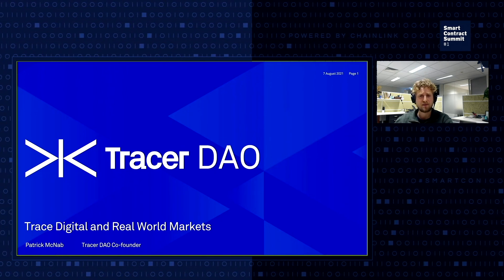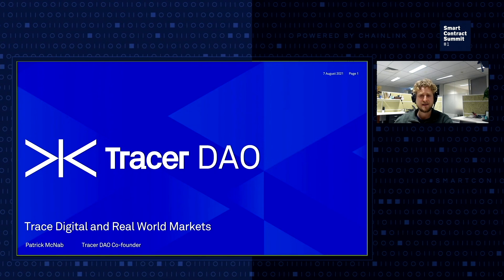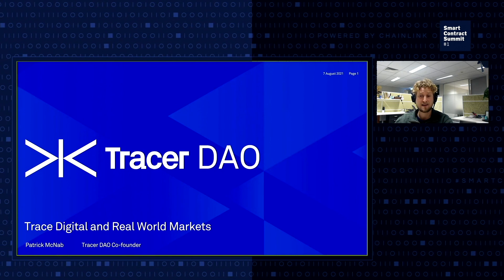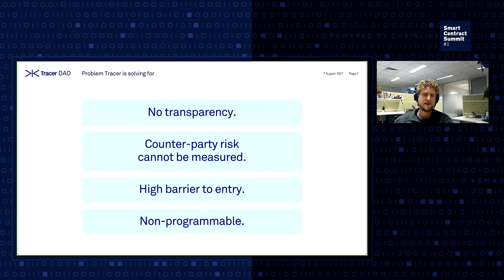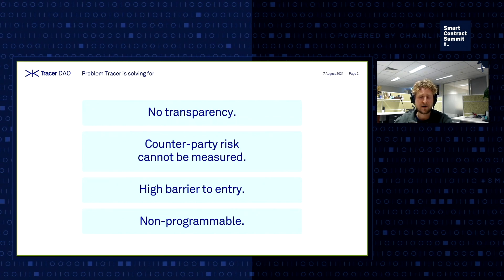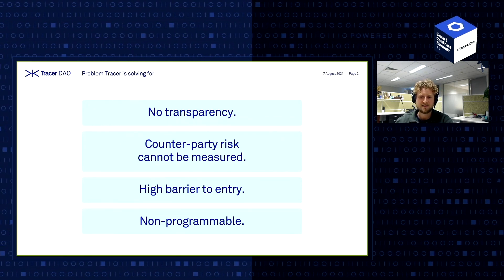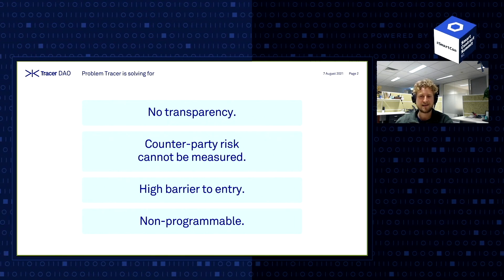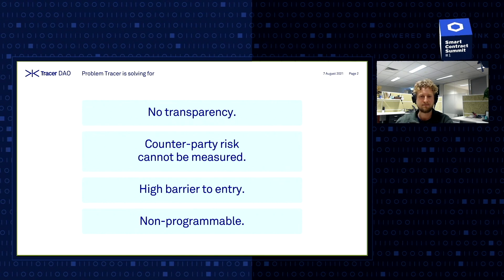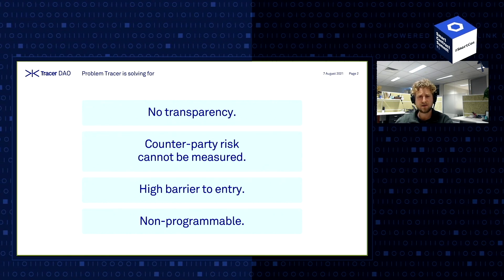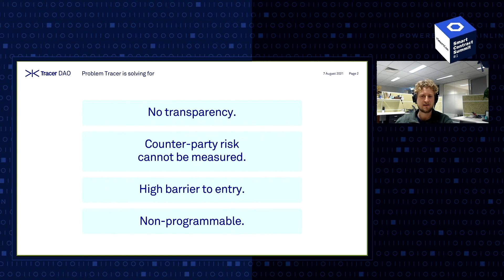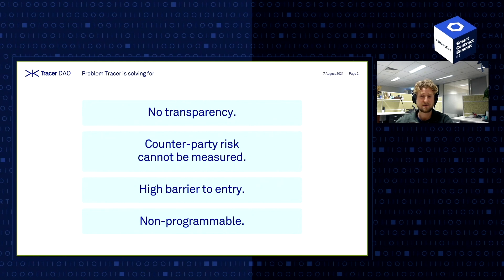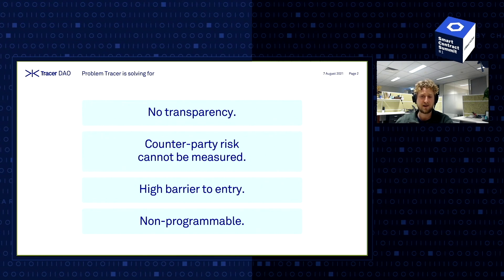I'll now kick off with the problems that we're solving with Tracer, which are problems that have plagued the derivative industry and given it a bad name for the past half century. Warren Buffett has gone on record saying that derivatives are financial weapons of mass destruction, which, in a financial system where counterparty risk is unclear and costly to prove, is quite true. Currently, all exchange data and risk-related data is siloed amongst a few centralized exchange firms, which have to manage the entire market's risk, which is costly and very difficult to do.